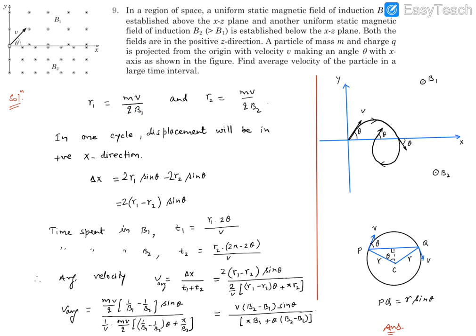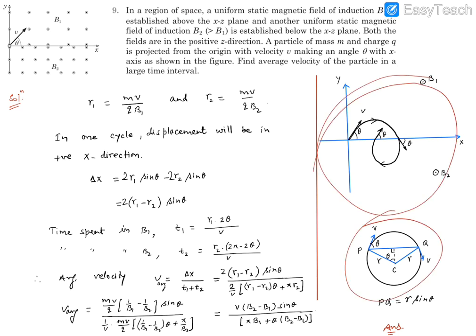The radius of circular motion is given by r = mv/qB. In the first zone (above the xz plane), the circular path has radius r1 = mv/qB1. In the second zone (below the xz plane), the radius is r2 = mv/qB2. Since B2 is greater than B1, r2 is smaller than r1 — the radius of the lower circle is smaller while the upper one is larger.